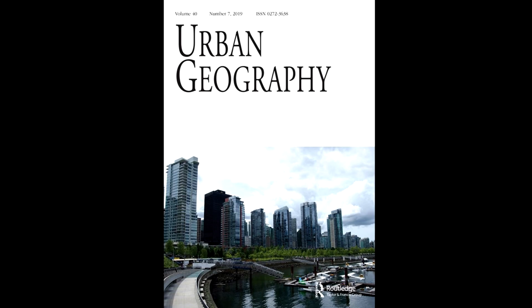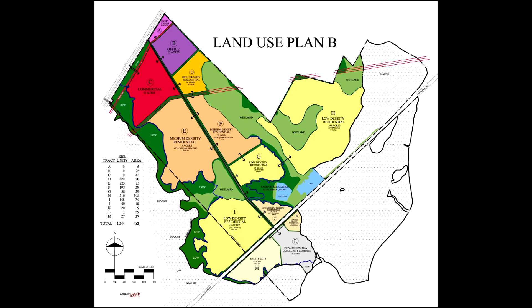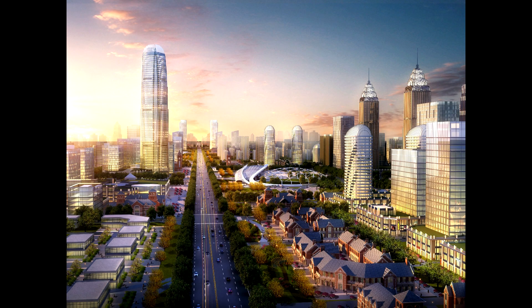Urban geography is the study of cities and includes urban structure and land use planning. If a developer has a plan for a new stadium, arena, or condo development, an urban geographer will look at how that new development could affect the surrounding city — including walkability, livability, cost of living, public transportation, and crime.